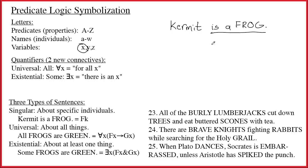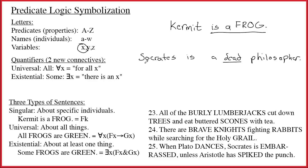Once you know the basic ideas about how to symbolize 'Kermit is a frog,' there are all kinds of sentences you can symbolize. Consider 'Socrates is a dead philosopher.' This sentence actually has two predicates, because it ascribes two properties to Socrates: being dead and being a philosopher. So when we symbolize the sentence, we get Ds (Socrates is dead) and Ps (Socrates is a philosopher), joined with an ampersand. It's not that a synonym requires the ampersand — it's that there are two properties being ascribed to Socrates.